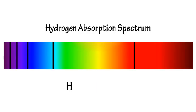These are the spectral lines for hydrogen, and the black lines appear at the particular wavelengths that are absorbed by hydrogen.